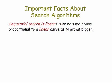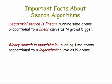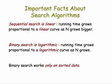So to summarize the important facts about search algorithms, we say sequential search is linear. Its running time grows proportional to a linear curve as N grows bigger. Binary search is logarithmic. Its running time grows proportional to a logarithmic curve as N grows bigger. And of course, binary search works only on sorted data.